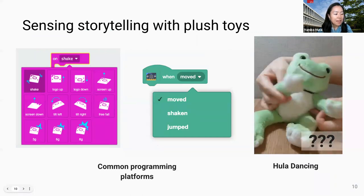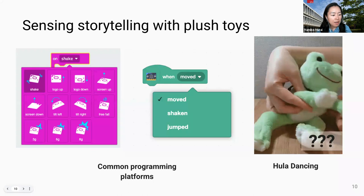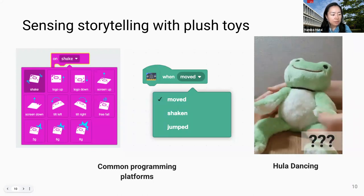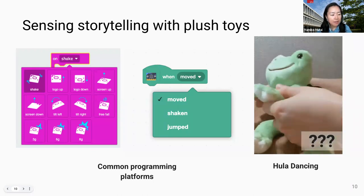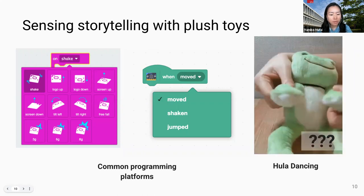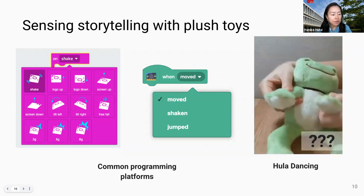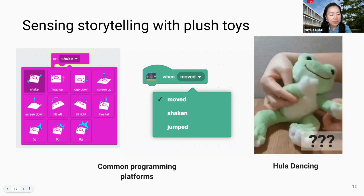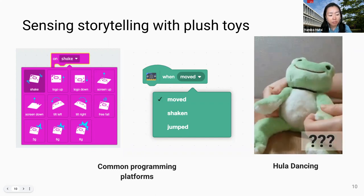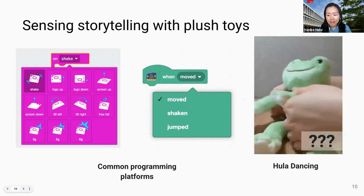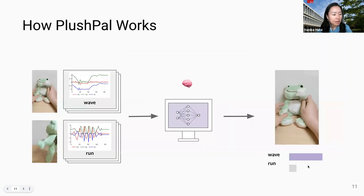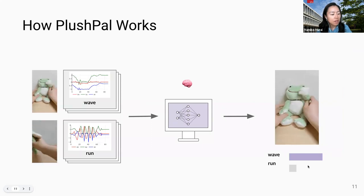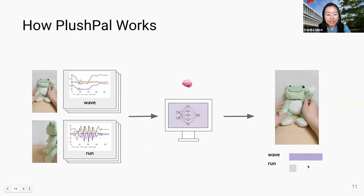Existing programming platforms support programming various movements. However, they are designed to be simple and minimally confusing and detect a limited number of movements. This is not ideal to sense the complex movements that children tend to do with their plush toys, like hula dancing. PlashPal uses machine learning to categorize and create models of gestures it has seen and make a prediction when you perform different gestures like wave, run, or hula dance.